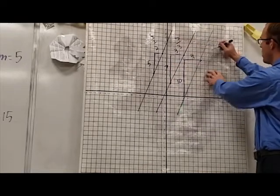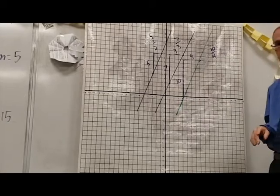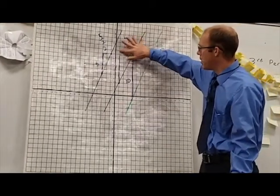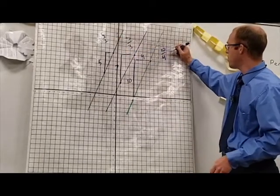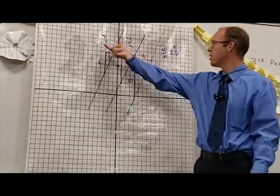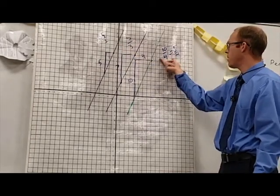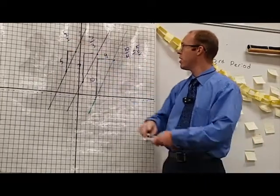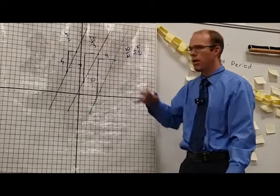And this one is ten-fourths. It might not look like these are parallel or have the same slope initially, but if we simplify these, ten-fourths simplifies to five-halves. So we can see that this one and this one have the same slope, even though they were originally written differently. So these two are parallel to each other. This one is not — black and green are parallel.